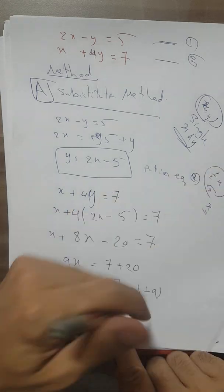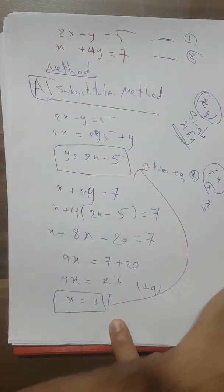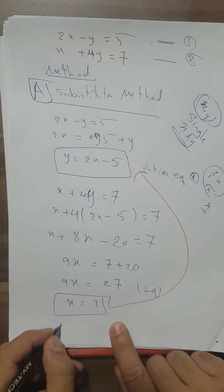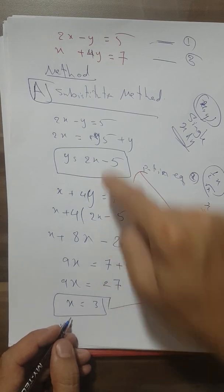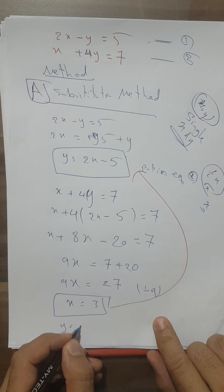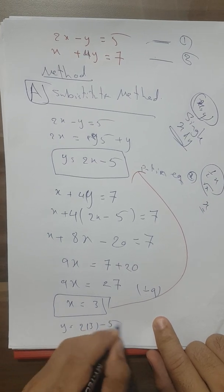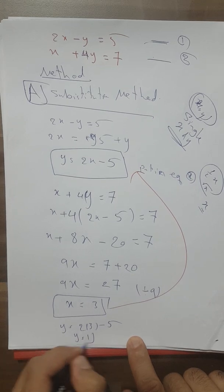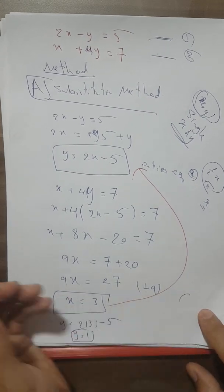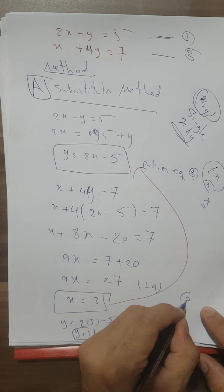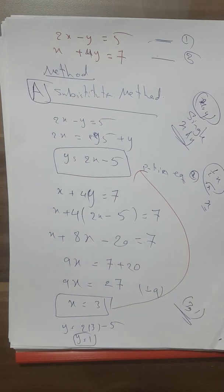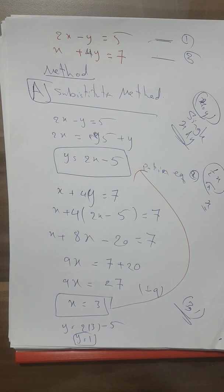Once we have x equals 3, we put it back into the substitution equation: y equals 2(3) minus 5 equals 6 minus 5 equals 1. So the solution is x equals 3 and y equals 1.